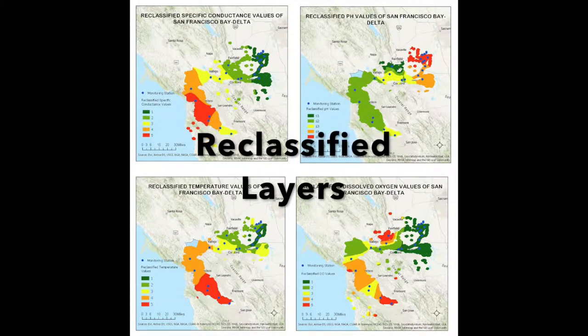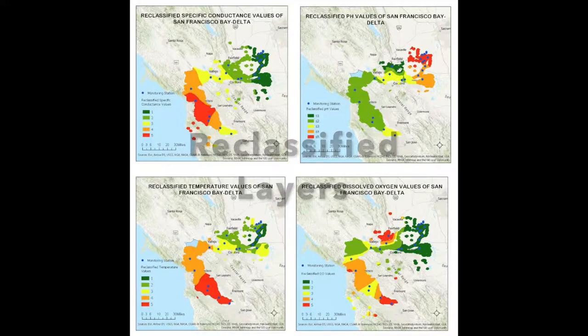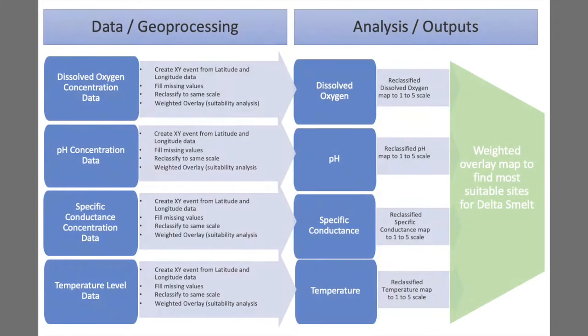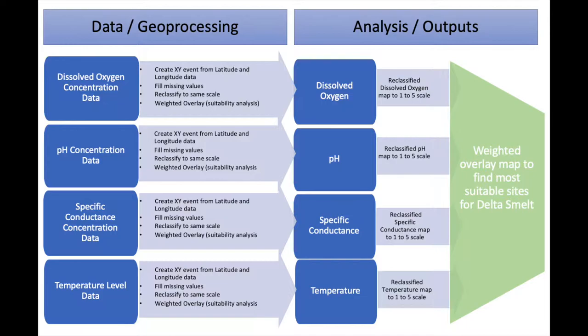With the reclassified values, we were able to use the weighted overlay tool to assign percent of relative importance for the four water quality characteristics. This flowchart of analytical steps illustrates the data inputs on the left and what modifications and geoprocessing steps were necessary to complete the analysis.